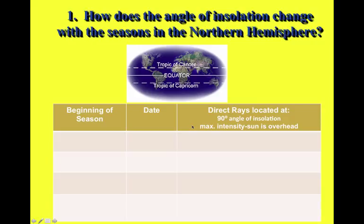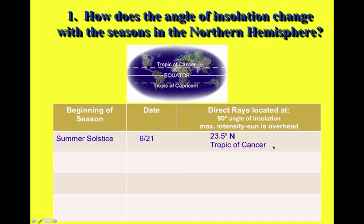We're going to talk about the beginning of each season and the dates, and where the direct rays — the 90-degree angle of insolation — are located. That means where the maximum intensity, the strongest sunlight, is, with the sun directly overhead. The first season is summer, the summer solstice, which occurs on June 21st. This is when the direct rays are closest to us, at 23.5 degrees north, which is the Tropic of Cancer.